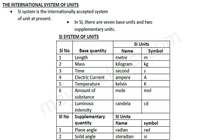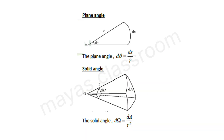Looking at the SI unit, we can see both the base units and supplementary units. For the plane angle, the formula is dθ = ds / R, where ds is arc length and R is the radius. This gives the radian as the unit of plane angle.